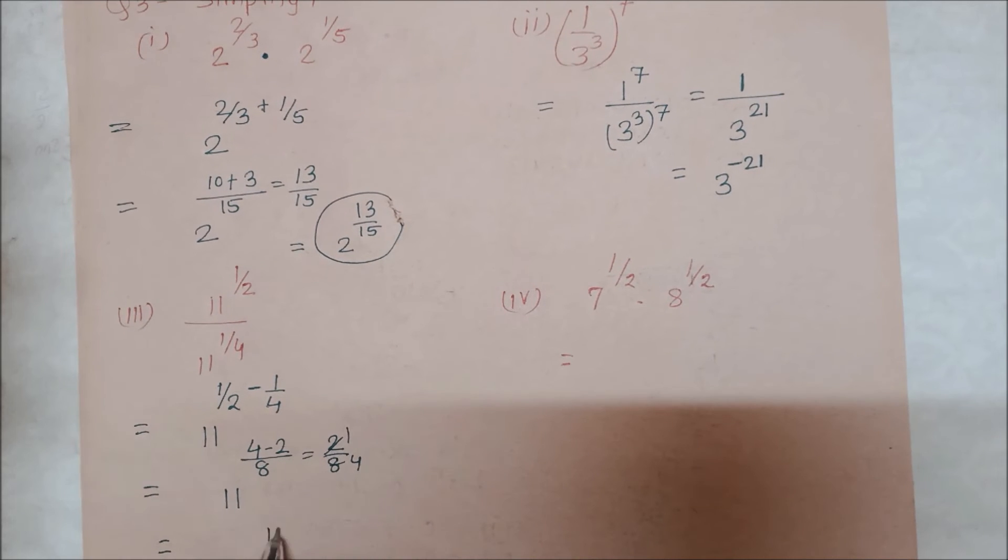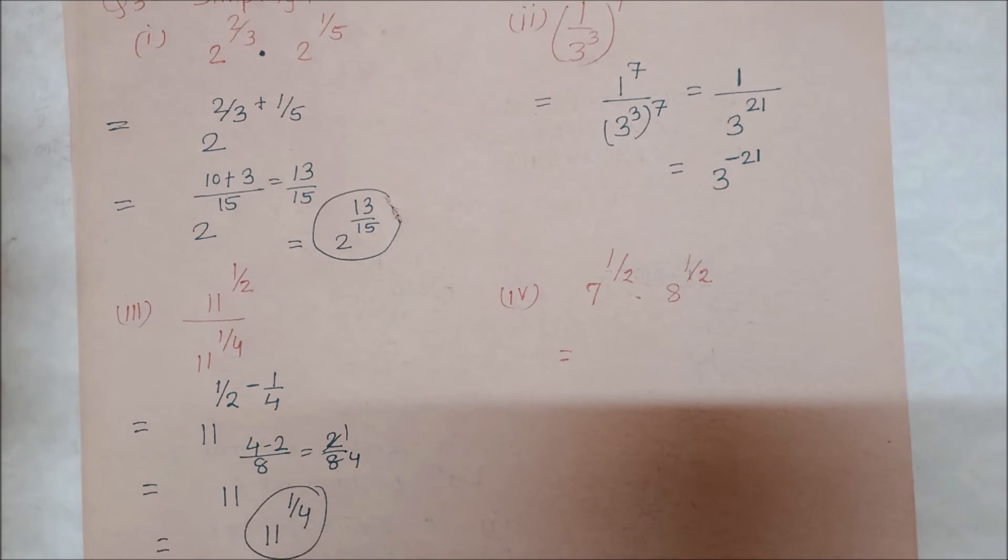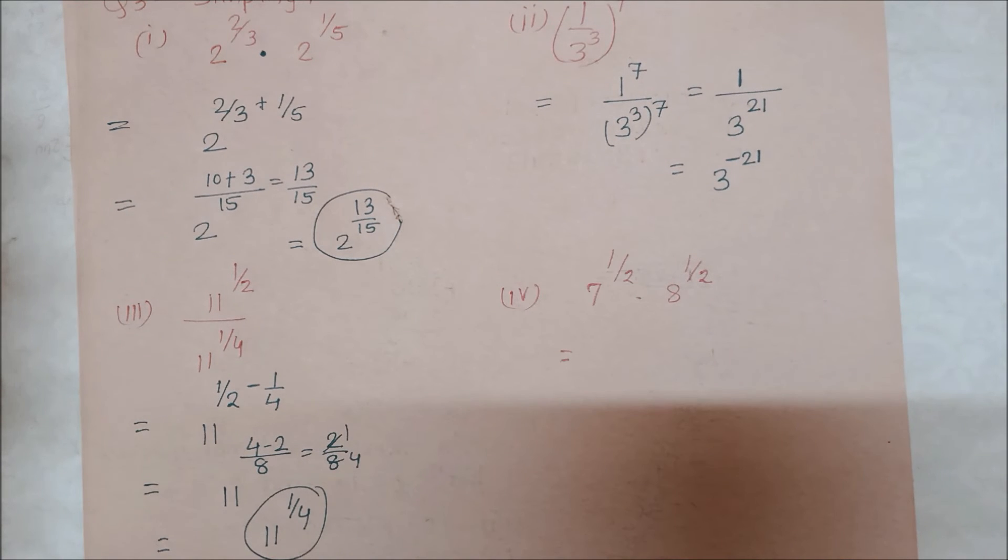And last we have 7 to the power 1/2 into 8 to the power 1/2. If the bases are different but their powers are the same, then normally what is said to do with the base, we do that. Here the bases are in multiplication.